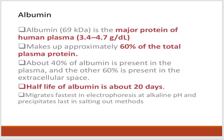Starting with albumin: it is the major constituent of plasma protein, having a molecular weight of 69 kDa. It is the major protein of human plasma at 3.4 to 4.7 grams per deciliter, making up approximately 60 percent of total plasma protein. About 40 percent of albumin is present in the plasma and the other 60 percent in the extracellular space. The half-life of albumin is about 20 days. It migrates fastest in electrophoresis at alkaline pH and precipitates last in the salting-out technique.